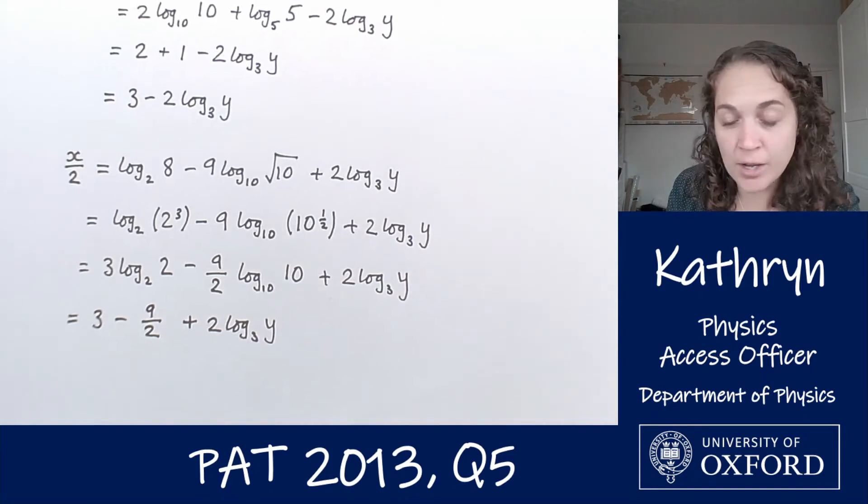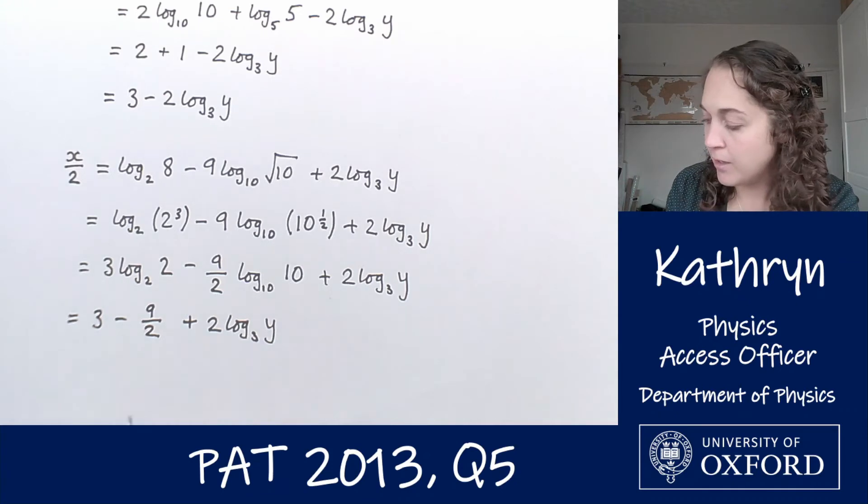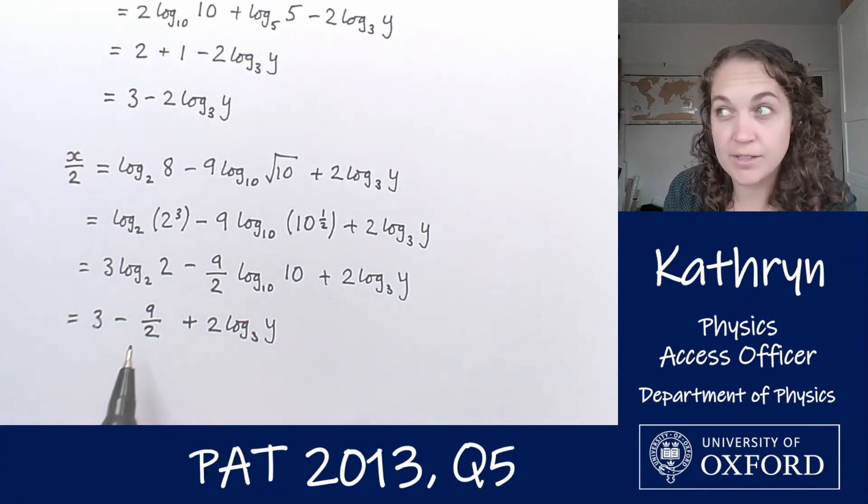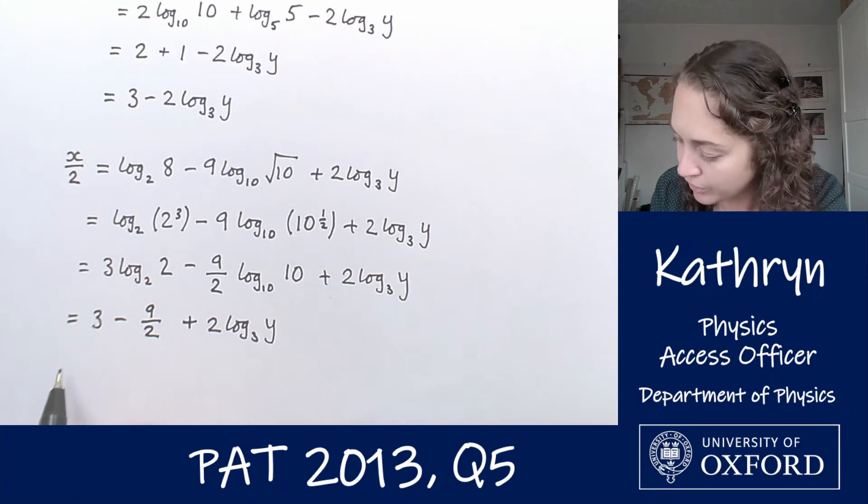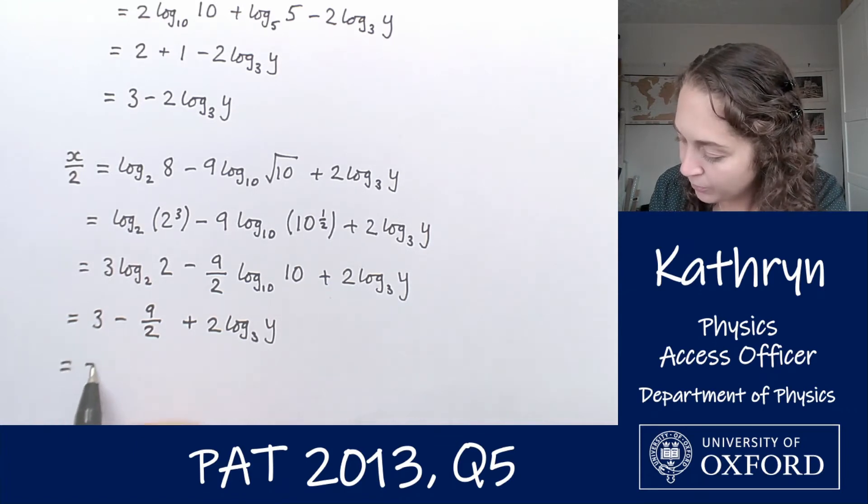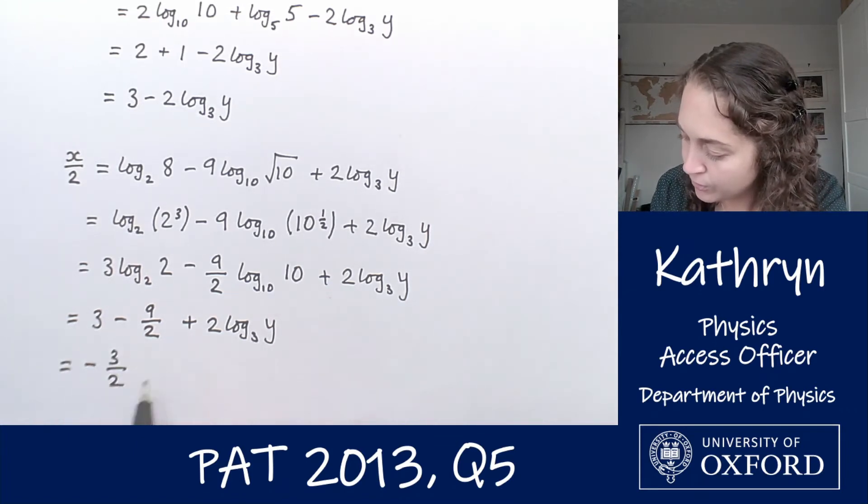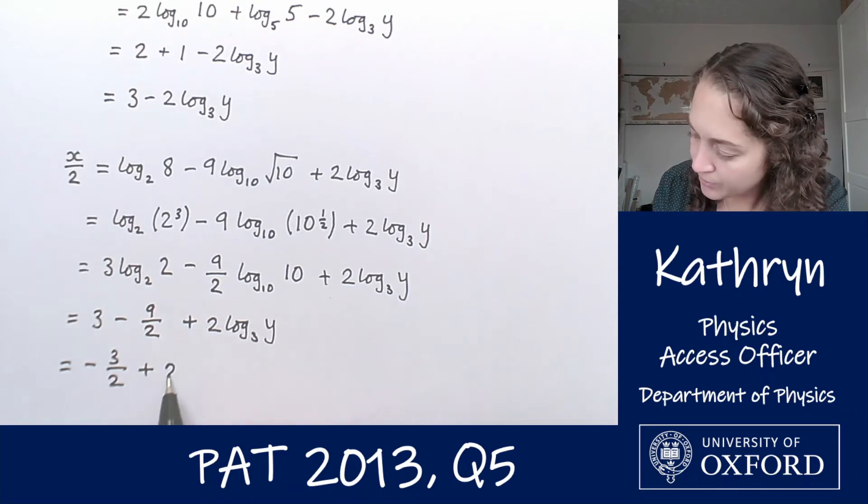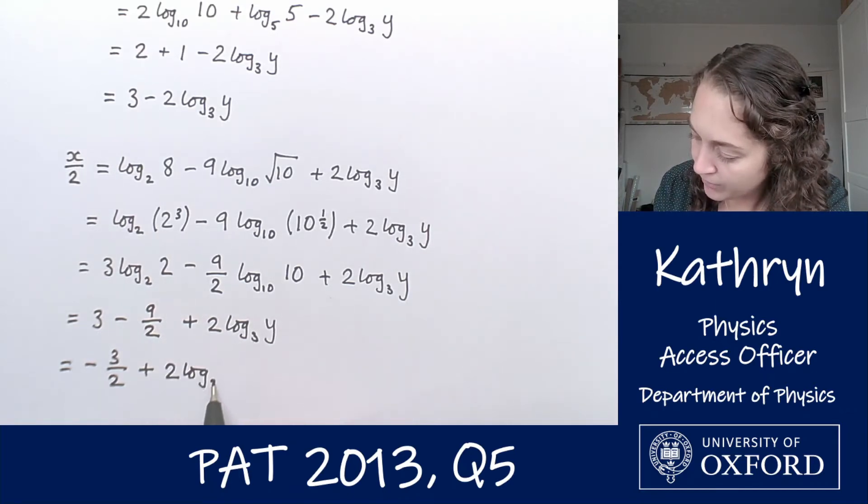3 minus 9 over 2, 9 over 2 is 4 and a half, 3 minus 4 and a half is going to be minus 1 and a half, so minus 3 over 2. That gives us minus 3 over 2 plus 2 log base 3 of y.